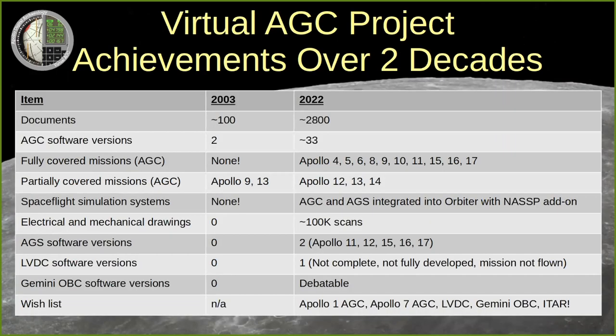A couple of decades has made a big difference in the amount of publicly available Apollo flight software and related material. Two AGC software versions have turned into over 30, representing the full AGC software needed for 10 different Apollo missions, and a couple more missions seem to be on the way. Meanwhile, a mere handful of documents has turned into nearly 3,000, but the wish list does still contain some very significant items.